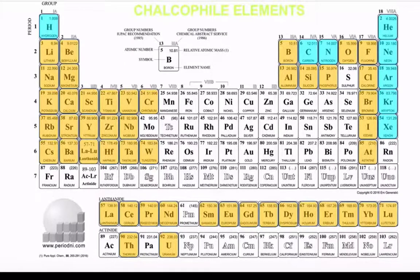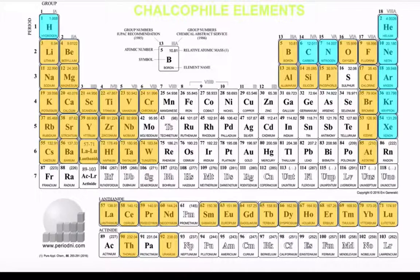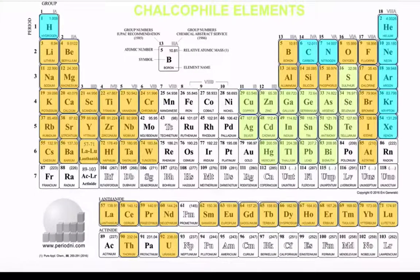The next group we call the chalcophiles. The chalcophile literally means ore-loving — minerals or elements that combine readily with sulphur. These are metals that are less likely to bond with oxygen and as a result they often form ore minerals, particularly sulphides.